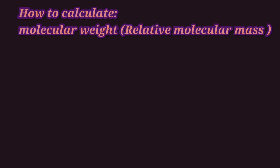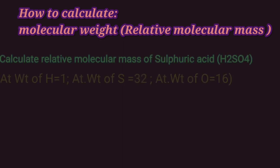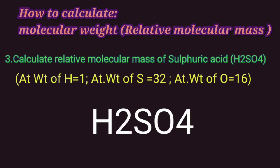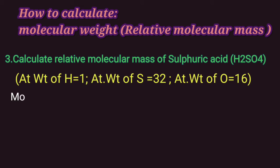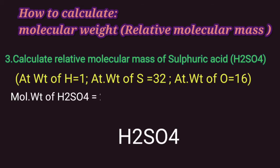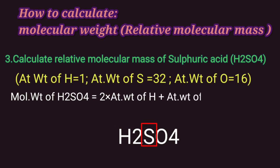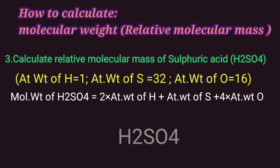The next question is to calculate the relative molecular mass of sulfuric acid. Relative molecular mass is the same as molecular weight. Sulfuric acid has 2 hydrogen atoms, 1 sulfur atom, and 4 oxygen atoms. To calculate molecular weight of sulfuric acid, we will add 2 into atomic weight of hydrogen, plus atomic weight of sulfur atom, plus 4 into atomic weight of oxygen atom.